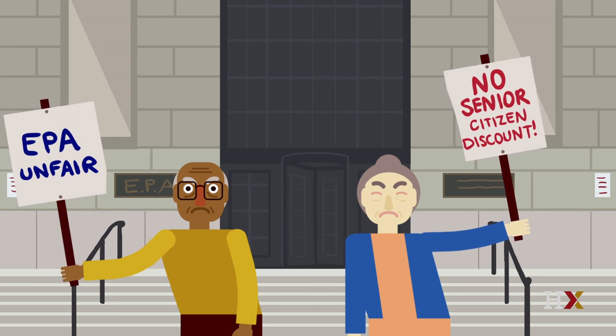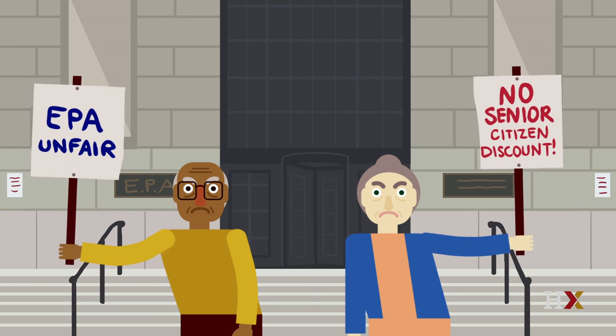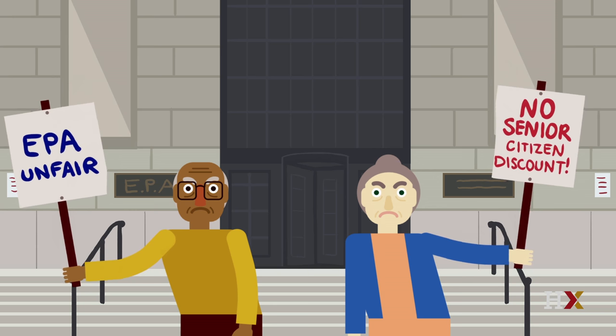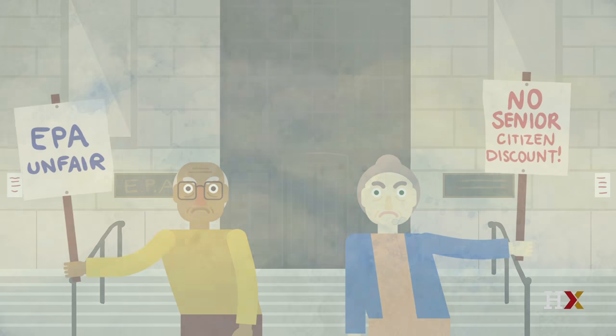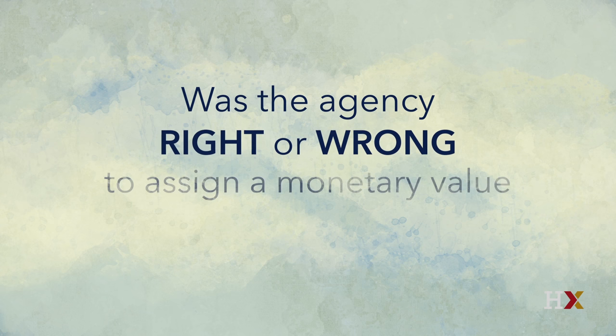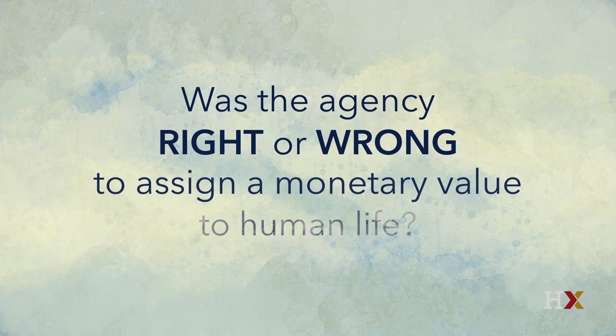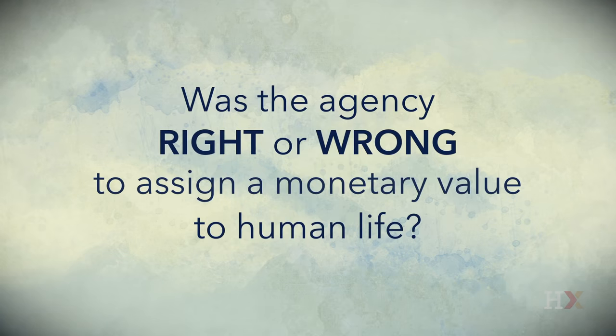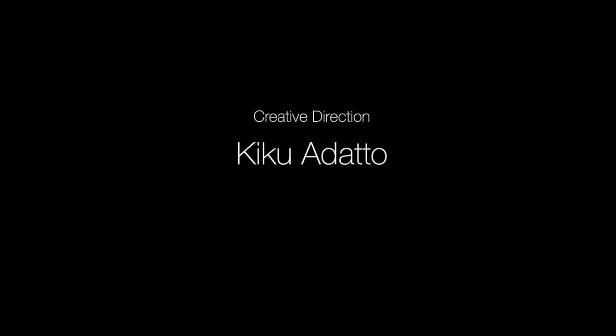Advocates for the elderly did not agree. They protested what they called the senior citizen discount. What do you think? Was the agency right or wrong to assign a monetary value to human life?